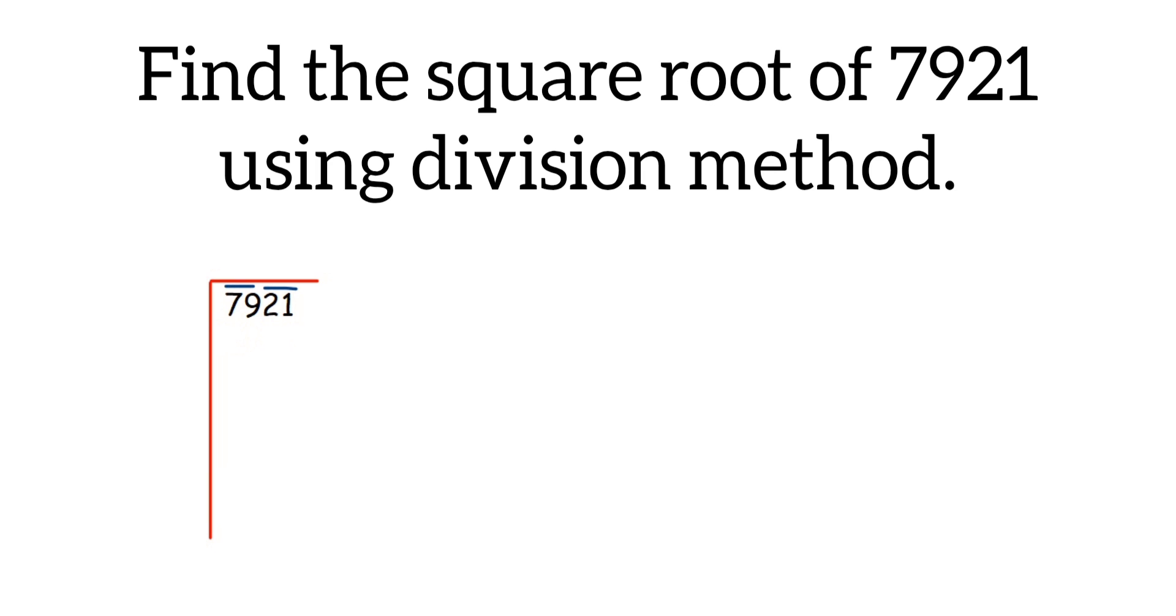In the division method, the divisor keeps changing in every step. For every new dividend you get, the divisor will be different. So how to find the first divisor?